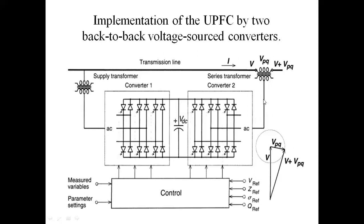Here, V plus VPQ — this VPQ is the Series Compensator injecting voltage. In this circuit, I have two converters: Converter 1 and Converter 2. Converter 1 converts AC to DC. Converter 1 is a Shunt Compensator. This transformer is connected in shunt. This is the supply transformer. This is the second Series Transformer, which is the Series Compensator. This VDC is commonly connected with the Series Compensator and Shunt Compensator.